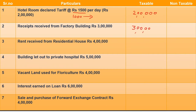Point 3: rent received from a residential house — I told you that a residential house will be non-taxable, and commercial activity will be taxable. Point 4: building let out to a private hospital — this will be taxable, so ₹5,00,000 will be taxable.